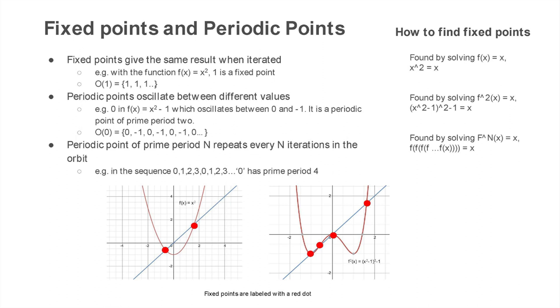An example of this would be plugging one into the squaring function. You get one in return, because one squared equals one. Something to note is that the orbit of these fixed points is just going to be the same point repeating forever.